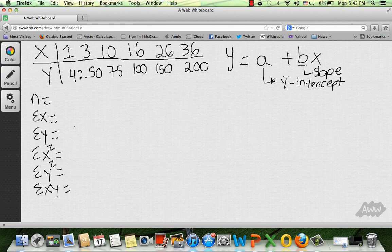So the first step is to figure out how many samples you have. So we say 1, 2, 3, 4, 5, 6. So n equals 6. The second step is to figure out the sum of x. So you're going to go ahead and do 1 plus 3 plus 10 plus 16 plus 26 plus 36. And once I add all those, that's going to be equals to 92.